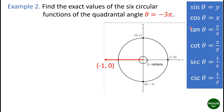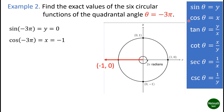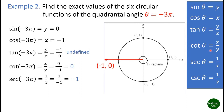Using the definition of the six circular functions: sine(-3π) = y = 0; cosine(-3π) = x = -1; tangent(-3π) = y/x = 0/(-1) = 0; cotangent(-3π) = x/y, which is undefined; secant(-3π) = 1/x = -1; cosecant(-3π) = 1/y = 1/0, which is undefined.